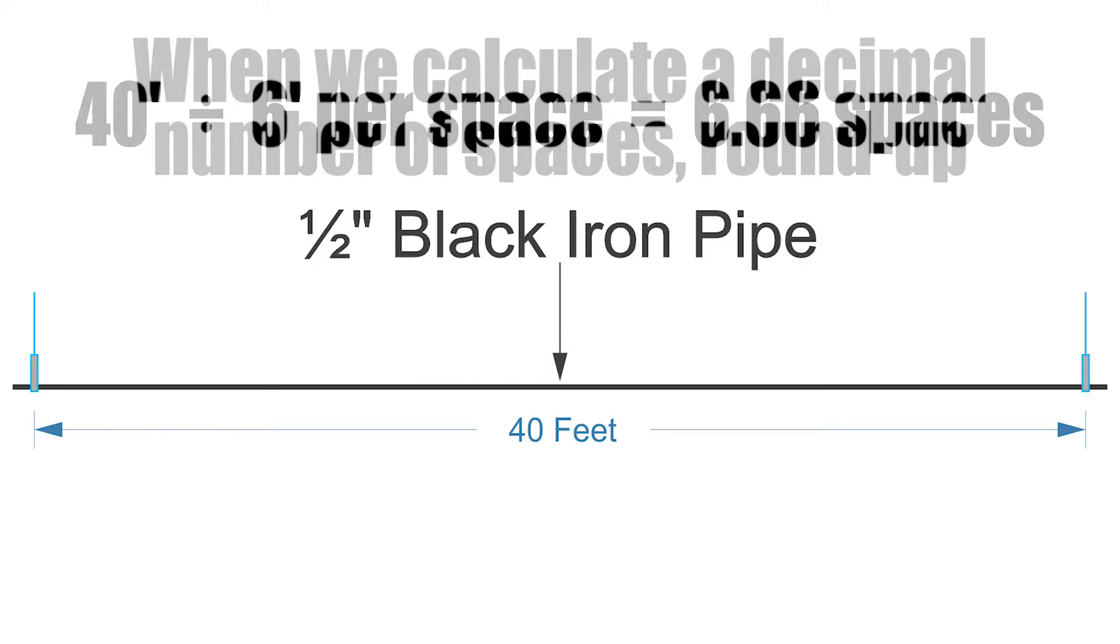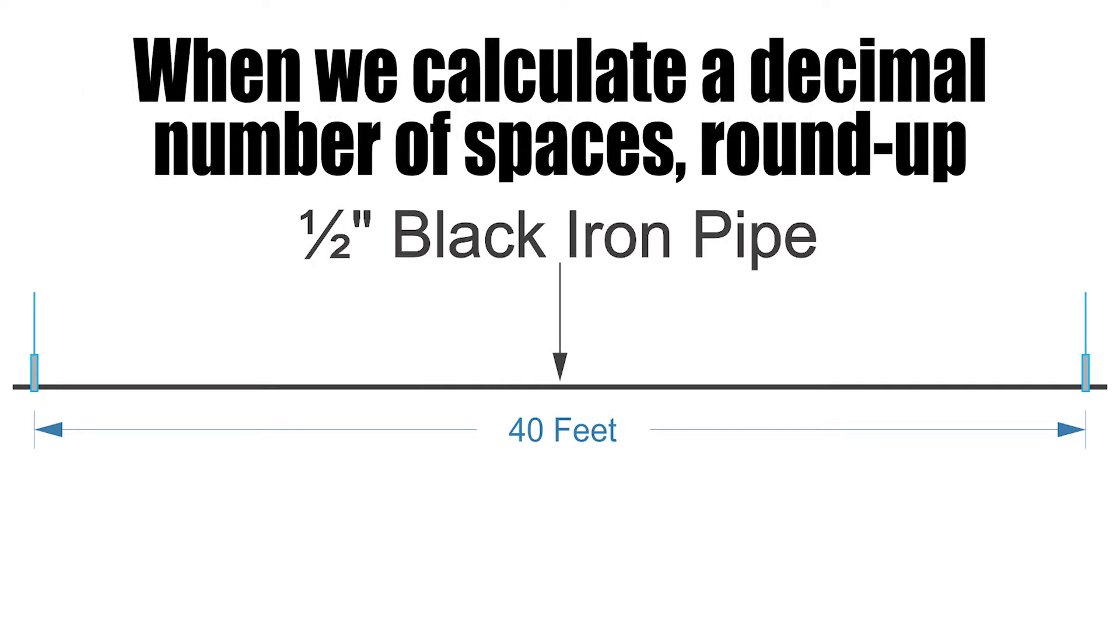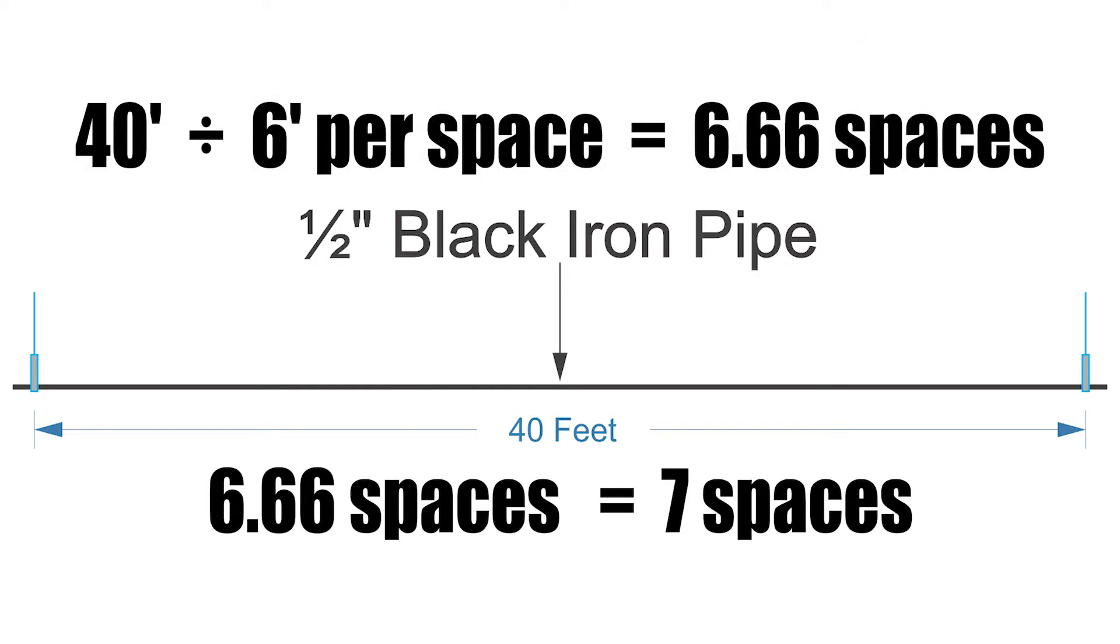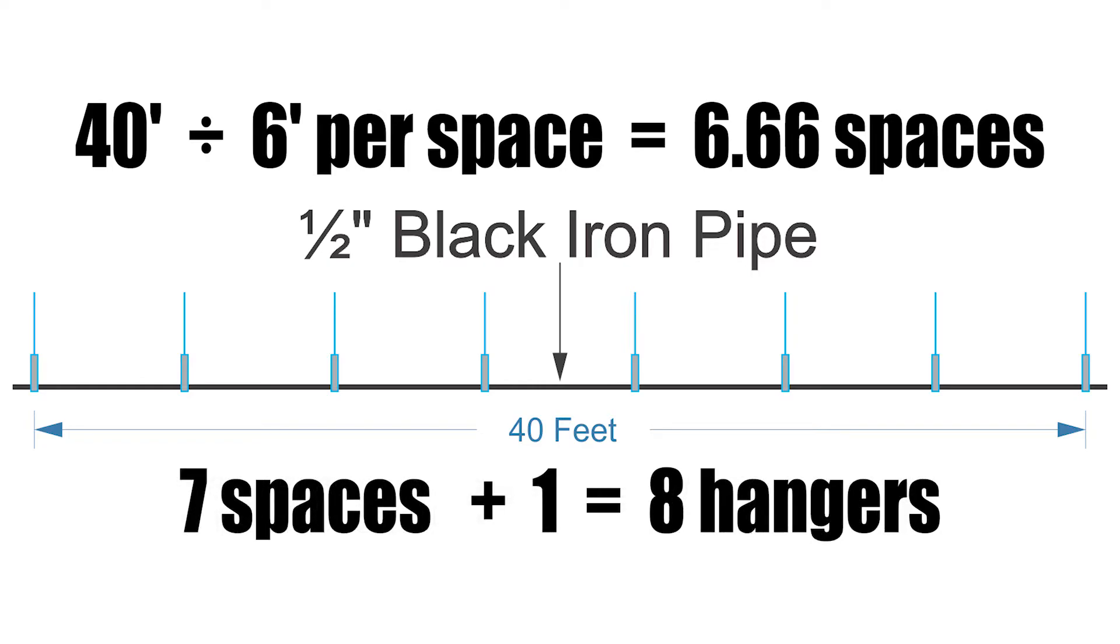Whenever we see a decimal place of any type we round up. So 6.66 rounded up equals seven, but we still need to add one for our first hanger. That equals eight hangers.